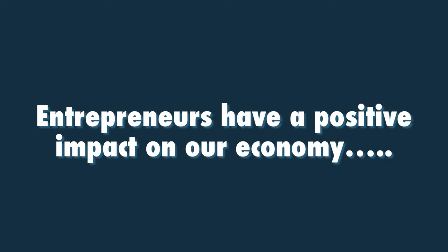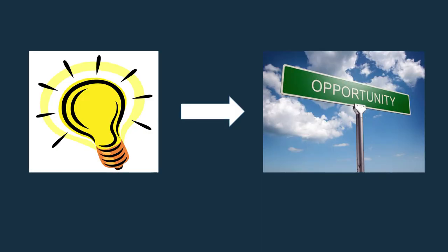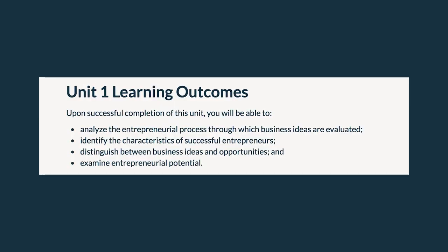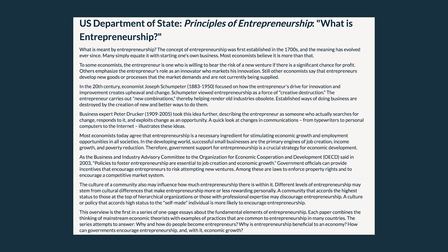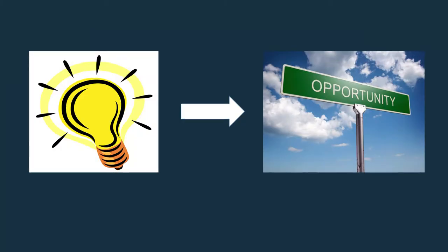In Unit 1, you learned that entrepreneurship is the process of creating new goods and services that are not already being produced. We can also view the entrepreneur as someone who seeks change, looks for ways to respond to those changes, and turns them into opportunities. As you explored the history and growth of entrepreneurship in the United States, you will have seen various theories applicable at various times, and that the entrepreneur continues to play a big role in the United States economy. But having an idea and recognizing how to turn that idea into an opportunity is a bit more complicated.